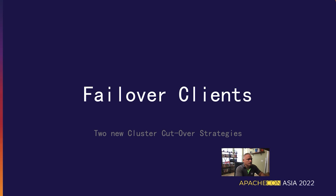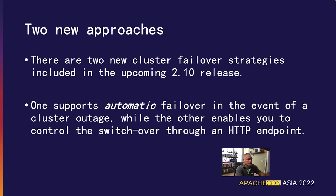Starting with release 2.10 of Pulsar, we have added a new feature called Failover Clients that solves these problems. There are two distinct types of failover clients available. The first automatically reroutes client connections to a different Pulsar cluster as soon as it detects a cluster outage. The second allows you to trigger the failover through an exposed HTTP endpoint — the client periodically invokes this endpoint to get the correct connection details. This approach allows admins to have more control over the failover process. Both have their advantages and disadvantages.